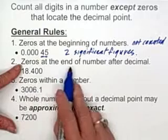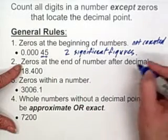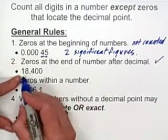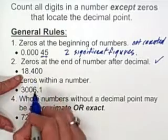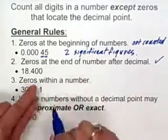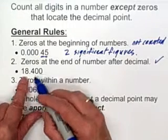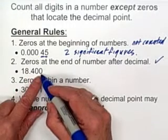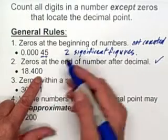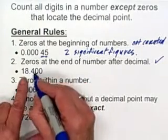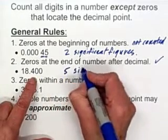When we have zeros at the end of a decimal, they are significant. So we do count them. So we have 18.400. We count all these digits. And the reason for that is if someone is, say, measuring a pipe, and they measure it to the thousandth degree of accuracy, then we need to count that. So we count all five of these digits, and so we have five sig figs here.